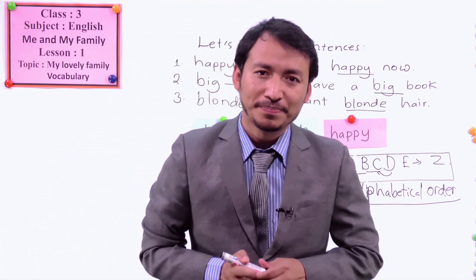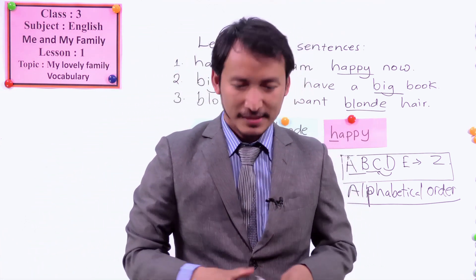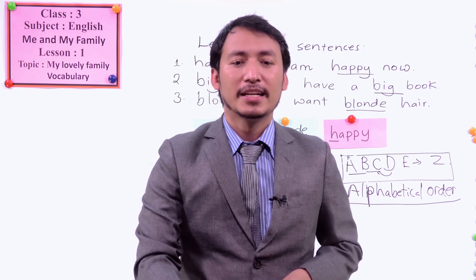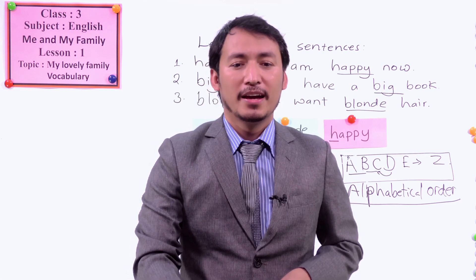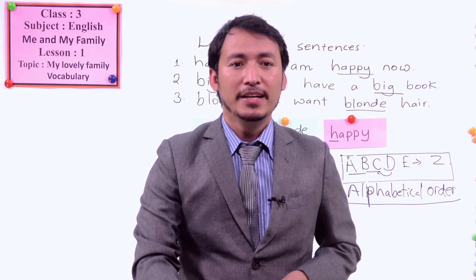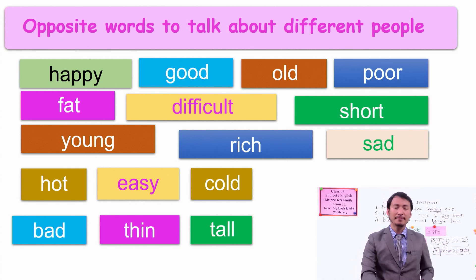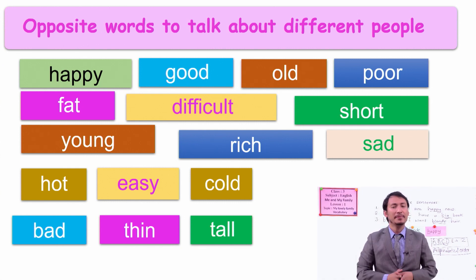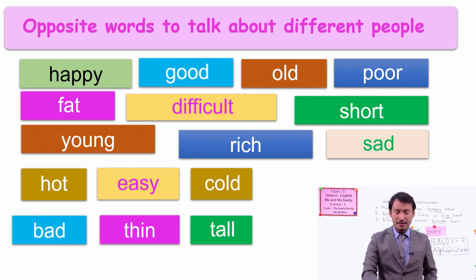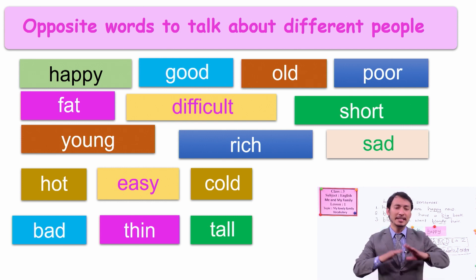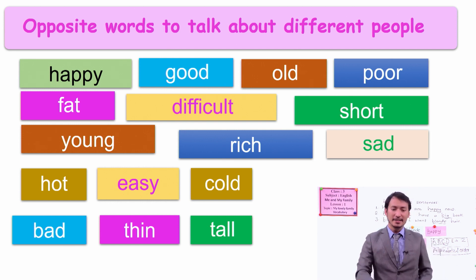Now let's see opposite words to talk about different people. We have different describing words again here, but they are pairs of opposite words. Opposite means just exactly different words — they have different meanings.